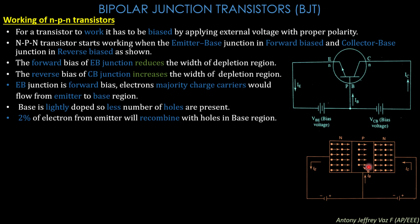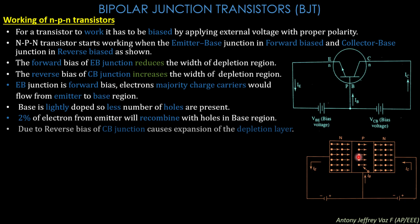Due to the small number of holes, only 2% of the electrons flowing from the emitter towards the base get recombined in the base region. The reverse bias of the collector-base junction causes expansion of the depletion region, which pushes deeper into the base region.